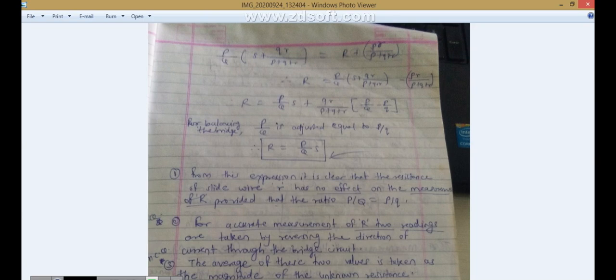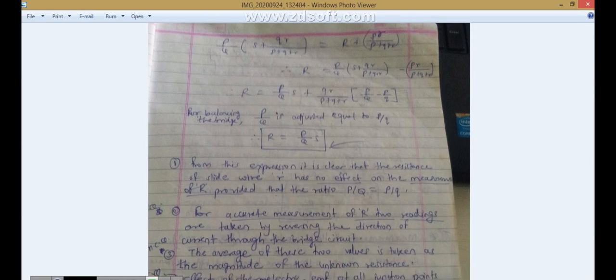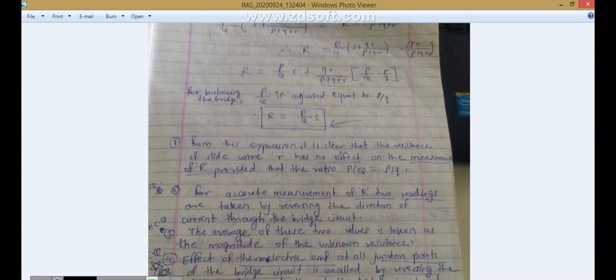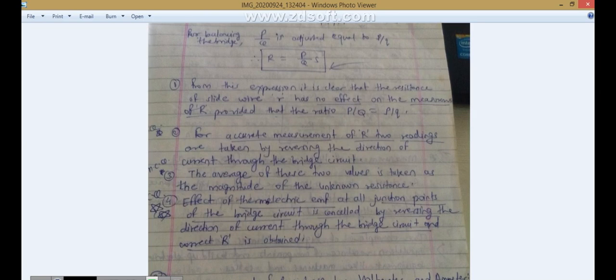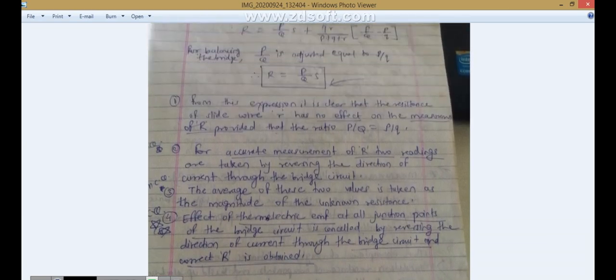By this expression you can find it out, but the condition is capital P upon Q equals small p upon q. So that ratio should be same. Then this will become zero, and the same expression obtained by Wheatstone bridge we are getting: capital R equals p upon q into s. From this expression it is clear that the resistance of slide wire r has no effect on the measurement of capital R, provided that the ratio of capital P upon Q equals small p upon q. Second conclusion: for accurate measurement of R, two readings are taken by reversing the direction of current through the bridge circuit. The average of these two values is taken as the magnitude of the unknown resistance. Effect of thermoelectric EMF at all junction points of the bridge circuit is cancelled by reversing the direction of current through the bridge circuit.